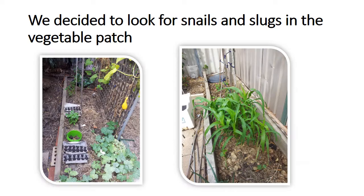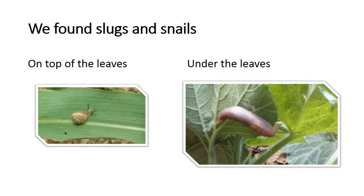The decision was made by group consensus to look at snails and slugs in the vegetable patch, as the group was confident they'd find some there, particularly since slug and snail pellets are not used in that area. The group allocated a small search space to investigate, and we took pictures of where we found slugs and snails — on the leaves and under the leaves.